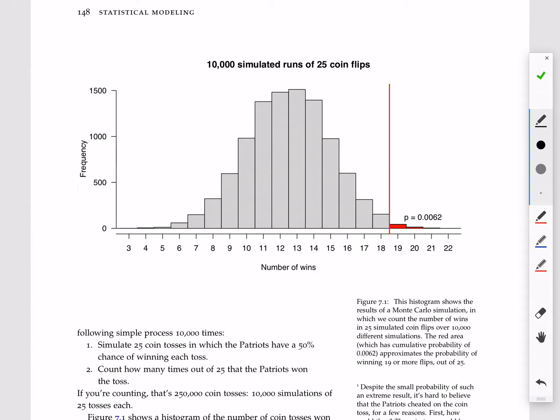Up to Monte Carlo error, that probability is this red area over here on the right, the probability of getting 19 or more. And that is a little bit less than 1%. It's 0.0062 or about six tenths of a percent.